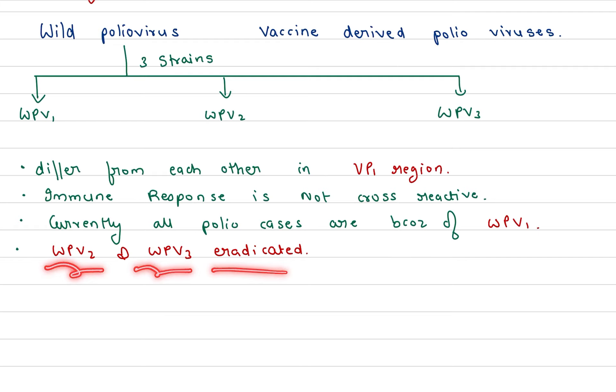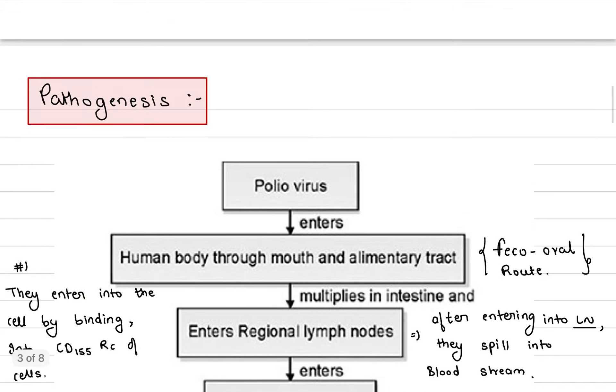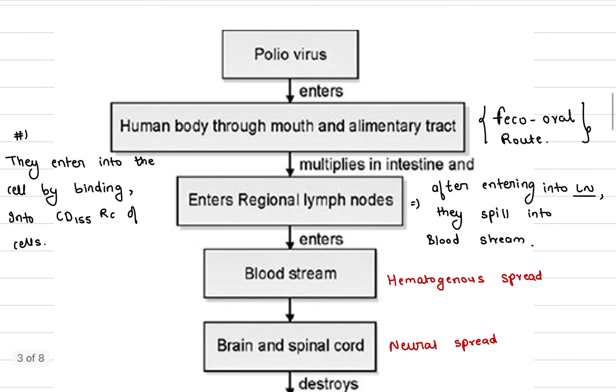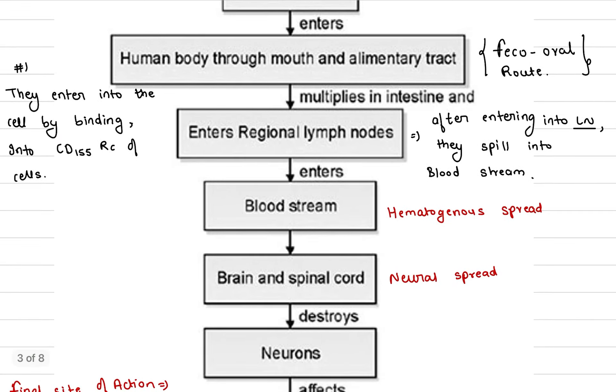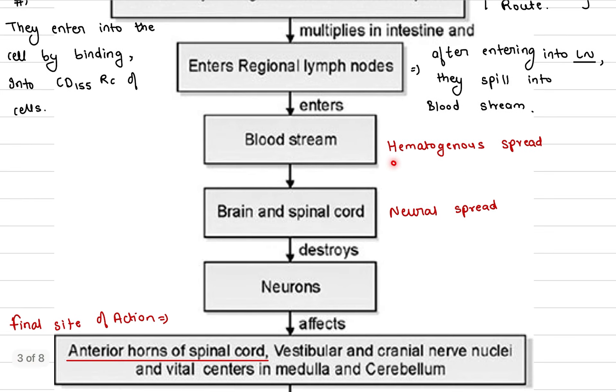Currently, all polio cases are because of WPV1. WPV2 and WPV3 are eradicated. Let's talk about the pathogenesis. Poliovirus enters the human body through mouth and alimentary tract via the fecal-oral route. It will go to the intestine and multiply. After that, it enters regional lymph nodes. After the lymph nodes, they spill into the bloodstream.